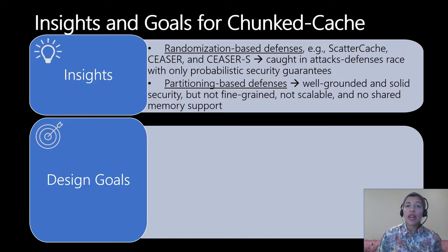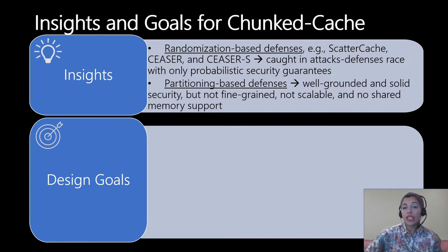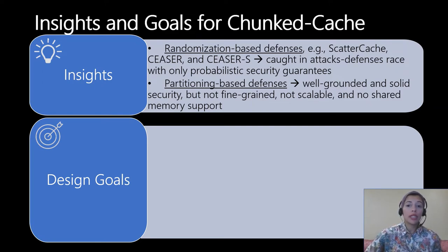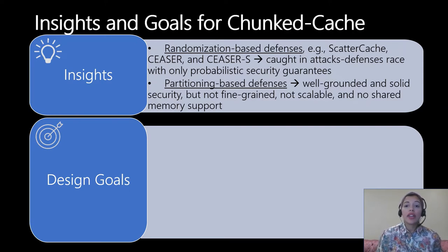Side-channel-resilient cache defenses proposed to date can be classified into randomization-based or partitioning-based approaches. Recently proposed randomization-based defenses are probabilistic in their security guarantees — every defense was followed by an attack to break it, then a stronger defense, then an alternative attack, in an incremental race. This reveals how randomization-based approaches will not cut it for secure cache design, as they do not tackle the fundamental problem. Strict partitioning offers well-grounded security guarantees, but existing defenses are not flexible, not fine-grained, and do not easily scale to support a large number of protection domains or shared memory.